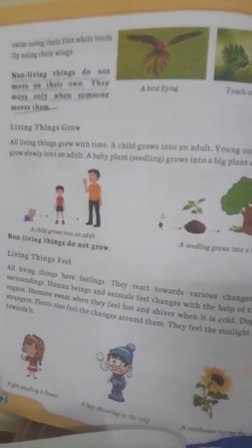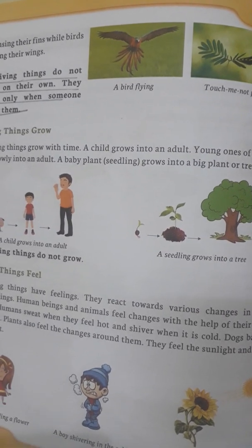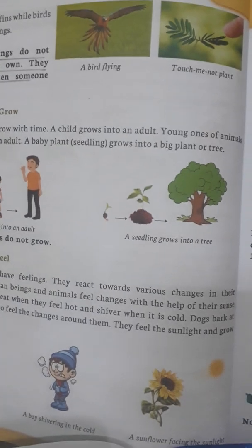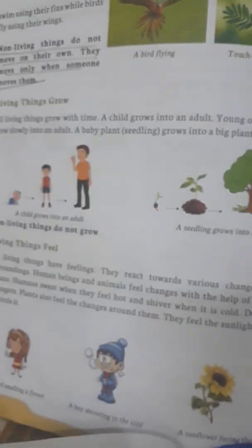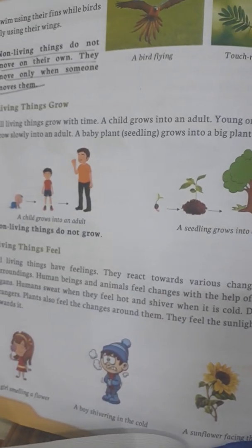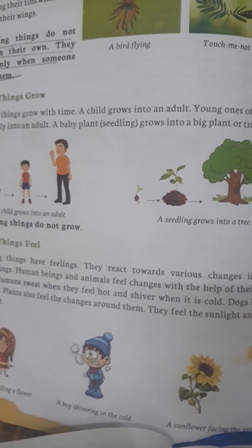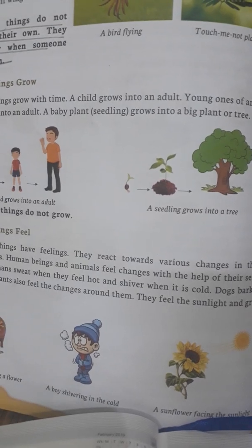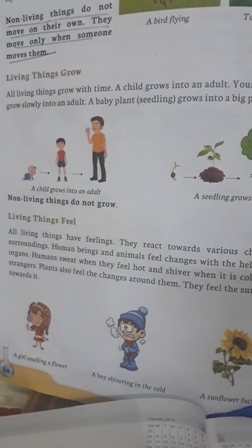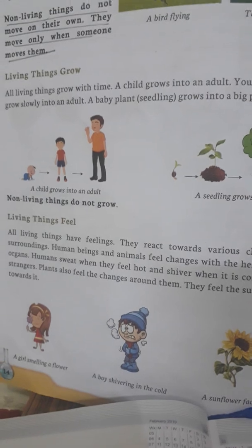Coming to the next point: living things grow. All living things grow and develop. Growth means an increase in size and weight, and development happens through changes in the body. You can see a child grows into an adult, and a small seedling grows into a tree. Non-living things do not grow.